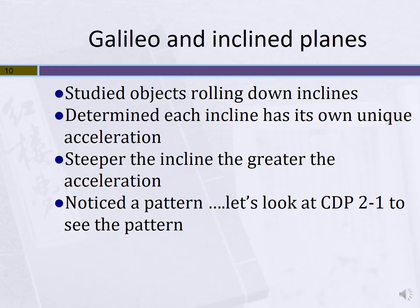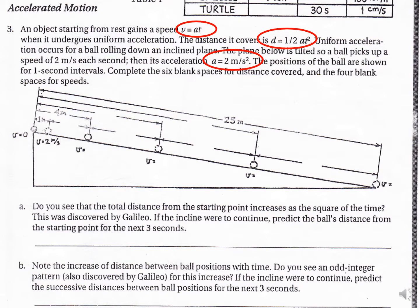The steeper the ramp, common sense tells us, our object would pick up more speed. So the steeper the incline, we would get a greater acceleration. But Galileo started to notice a pattern. This is where you were supposed to look at that blue packet — concept development page 2-1. At time equals one second, find the velocity and find the distance. So if you didn't do that yesterday, we're going to talk through that part today.